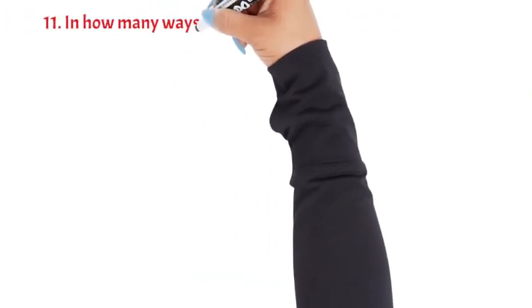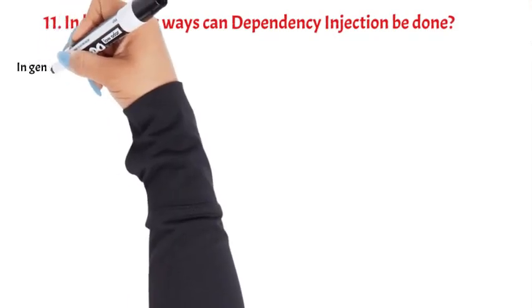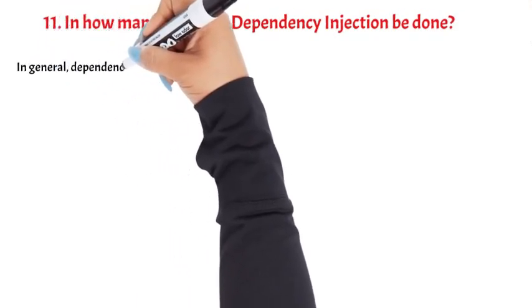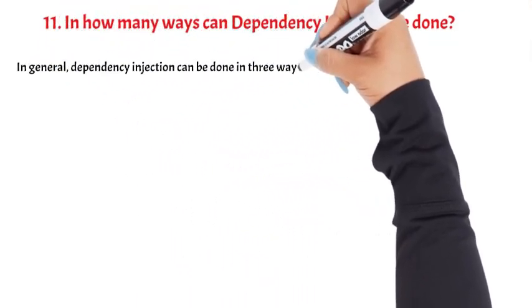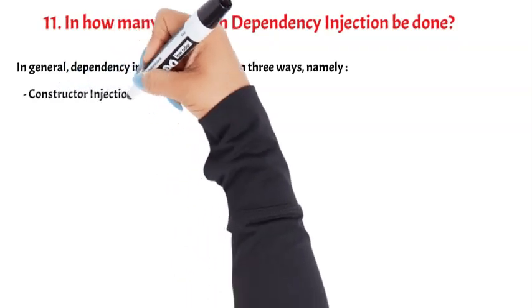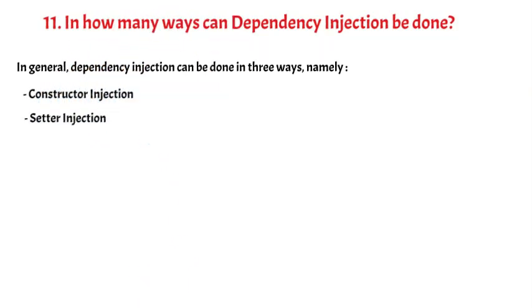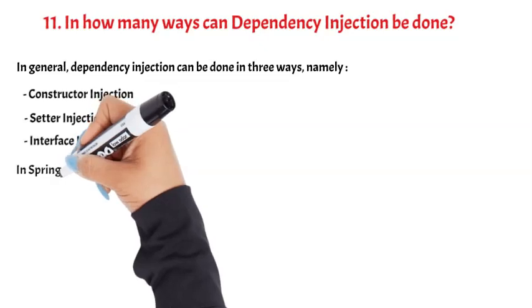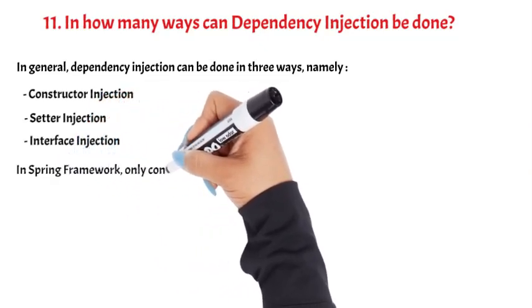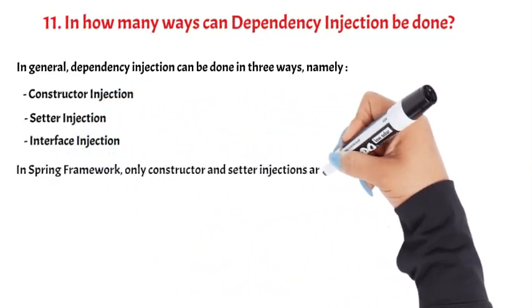Question 11: In how many ways can dependency injection be done? In general, dependency injection can be done in three ways: constructor injection, setter injection, and interface injection. In Spring Framework, only constructor and setter injections are used.